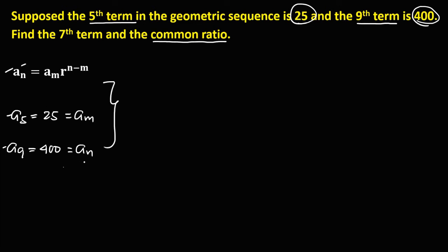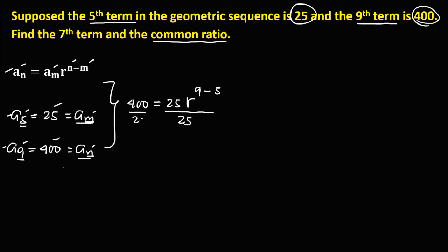So to find the common ratio from this formula, we have a sub n, and a sub n is 400, equals a sub m. So a sub m is 25, then times r to the power n. Since a sub n equals a sub 9, so n is equal to 9. Then minus m, since a sub m equals a sub 5, so m is equal to 5. Then simplify: divide both sides by 25, so 400 divided by 25 is 16, and we have r to the power 9 minus 5, that's 4, so r to the power 4.